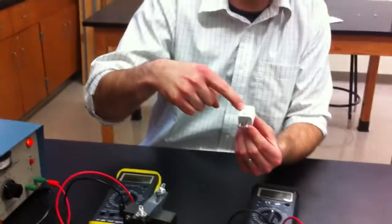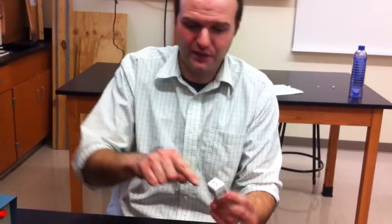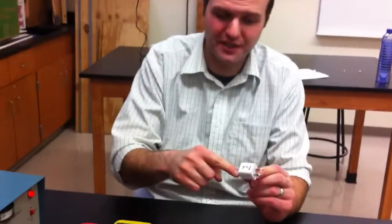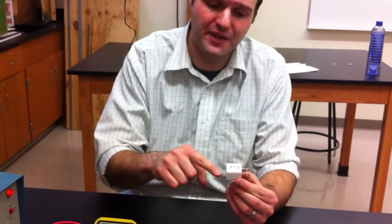So like this transformer here, this would also be a step-down transformer. Because it's taking in 120 volts and it's actually putting out only 5 volts. So you need this to charge your phone, because your phone can't take in 120 volts—it would fry the circuits inside there.